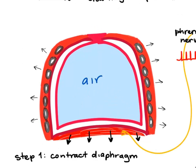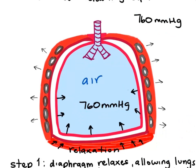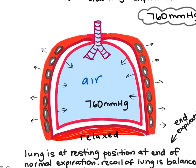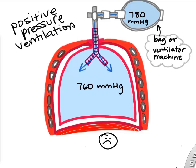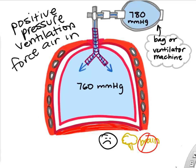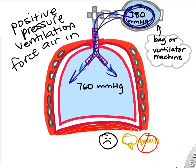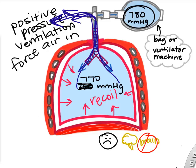To summarize: we expand the lungs and drop the pressure, air flows in; we recoil the lungs, causing pressure to rise, and we breathe out. You can also force air into the lungs using positive pressure, like a breathing bag or ventilator — useful if the brain isn't ventilating for you. The lungs will breathe out on their own during ventilation because they recoil and create increased alveolar pressure to push air back out.